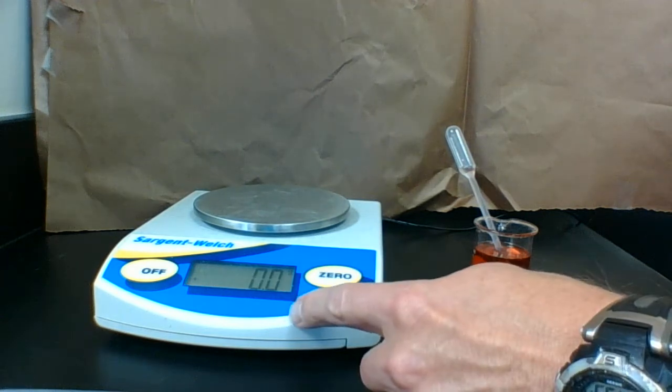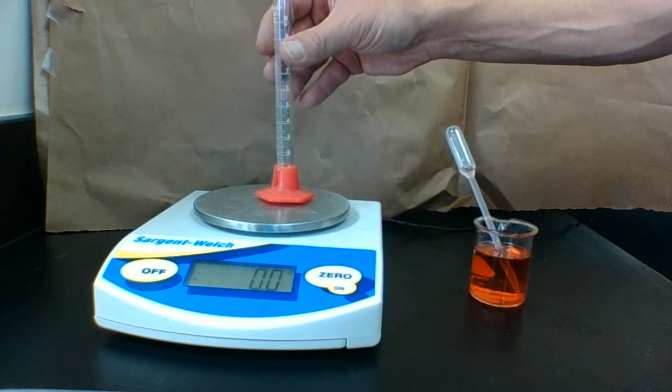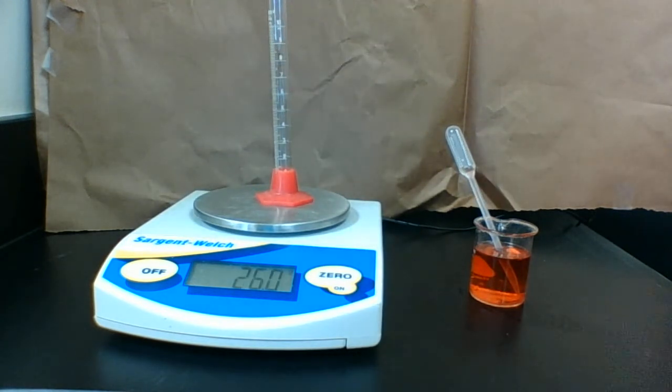I'm going to take a digital scale that's 0.0 grams and I'm going to put a completely empty graduated cylinder on it. That's an important piece of information.